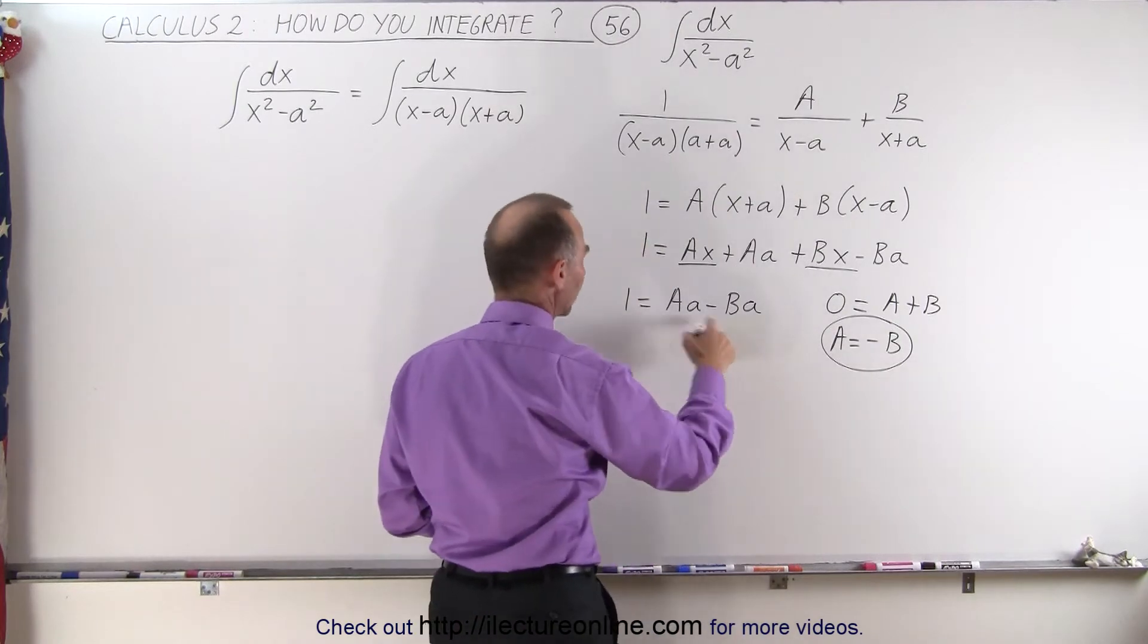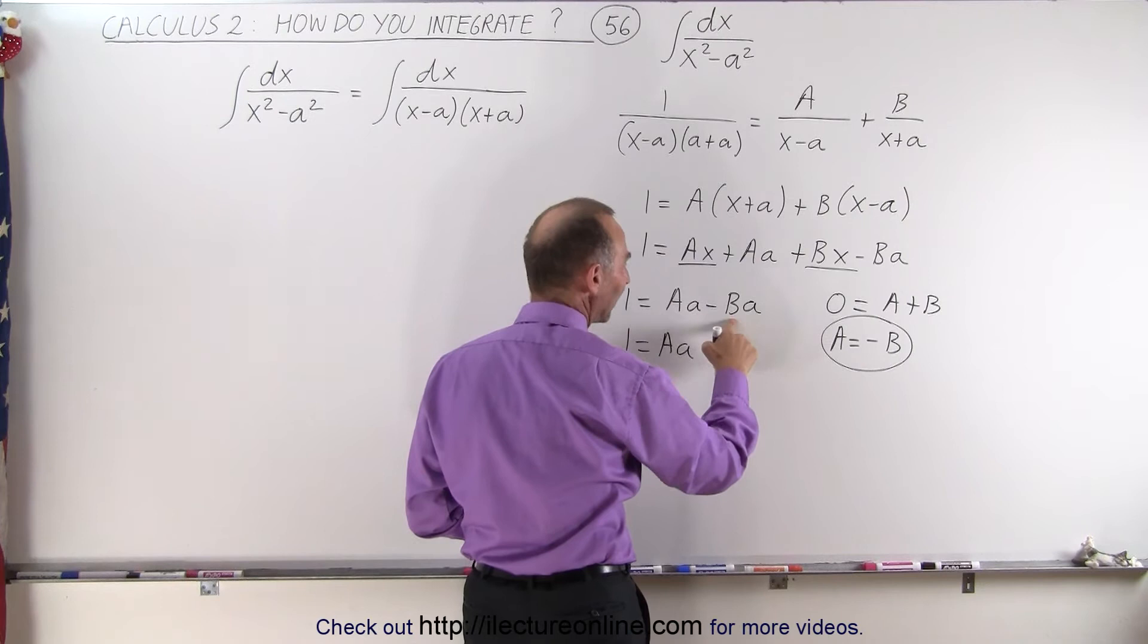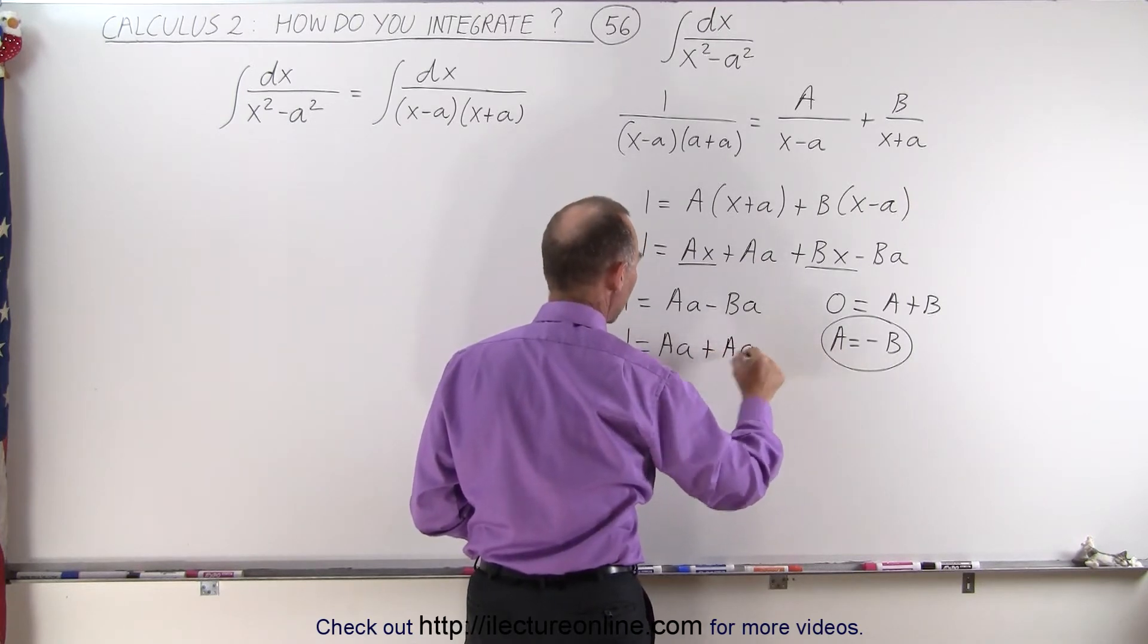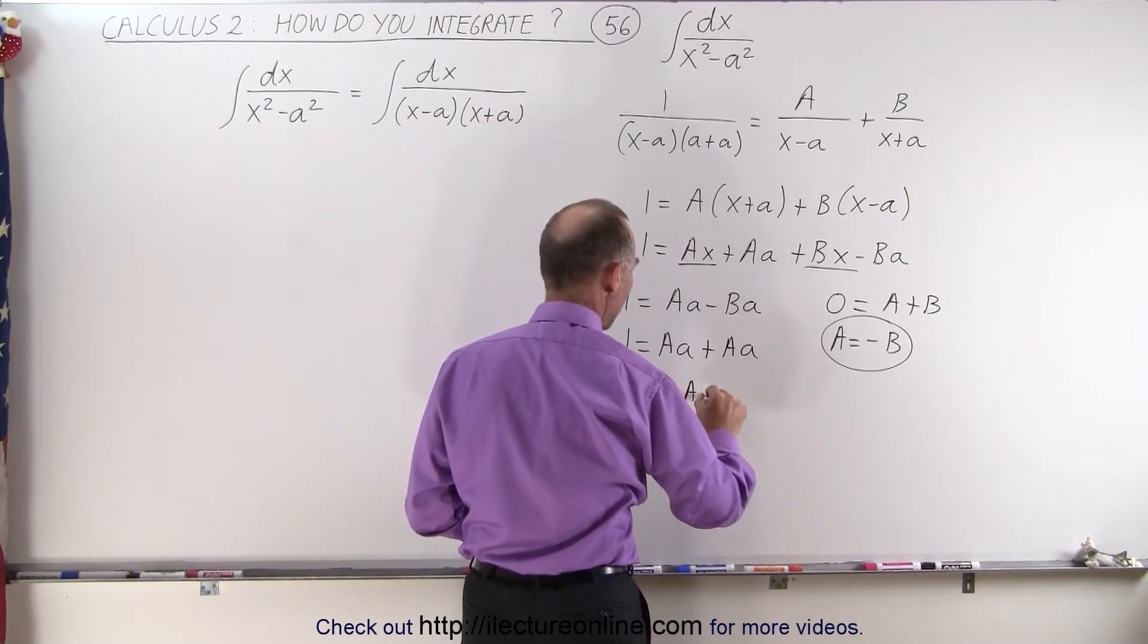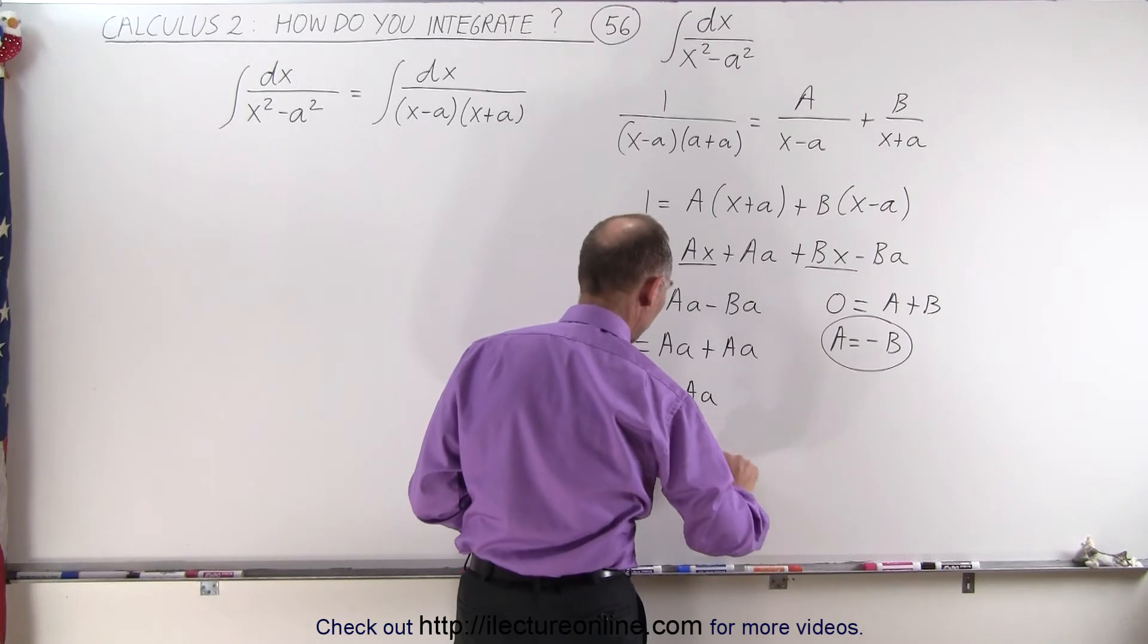And then we can plug that in here. So we get 1 is equal to Aa. And instead of minus Ba, we're going to write plus Aa, so it becomes plus Aa. So 1 equals 2Aa, or A equals 1 over 2a.